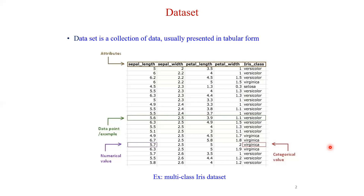Now, what is the process of classification and what is the process of prediction? Suppose we consider the same data point but the class is not given. The data is given — sepal length is 5.6, sepal width is 2.5, petal length is 3.9, and petal width is 1.1 — but the class of the flower is unknown. The process of detecting the class of an unknown data point is called classification.